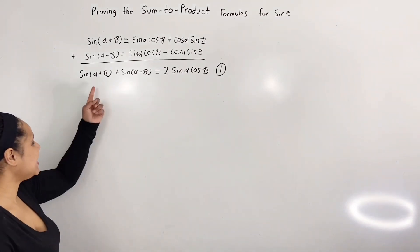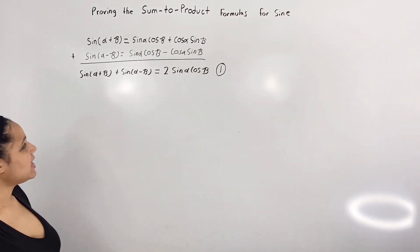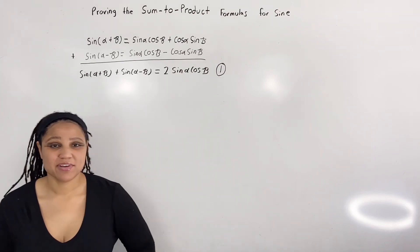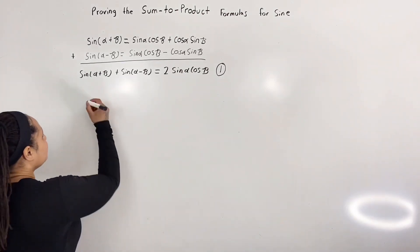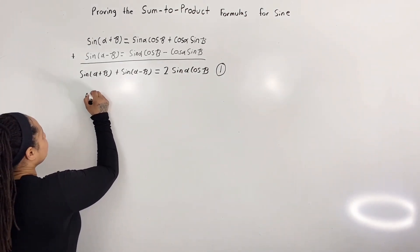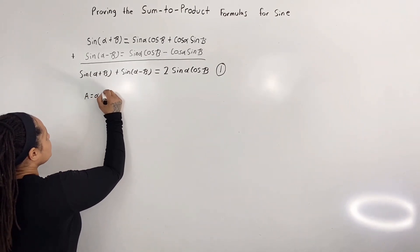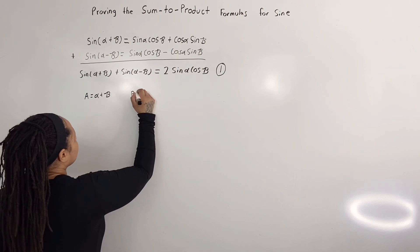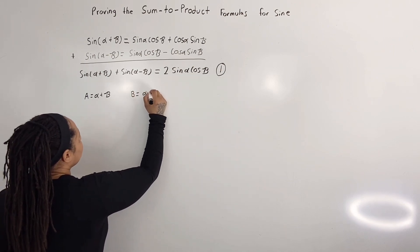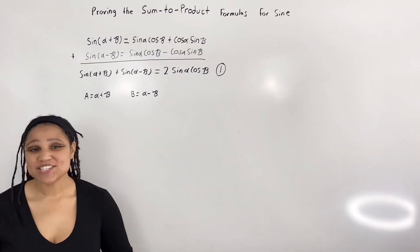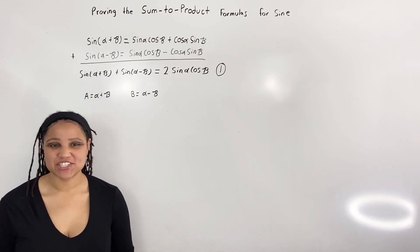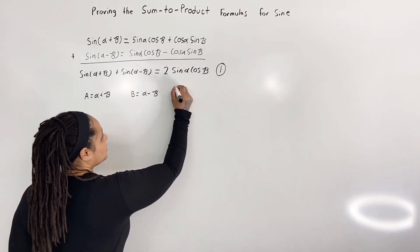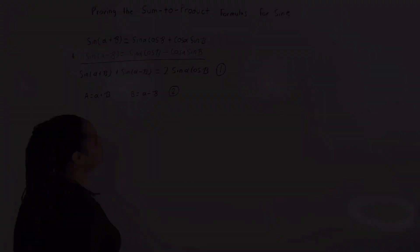What we're going to do is let A equal α plus β, and let B equal α minus β. So, A equals α + β and B equals α − β. Let's call these two equations equations two.